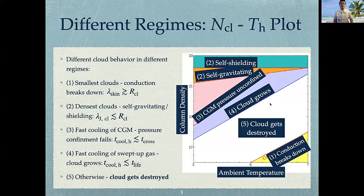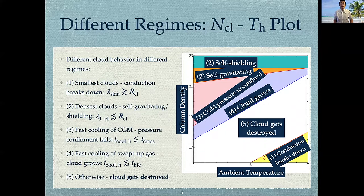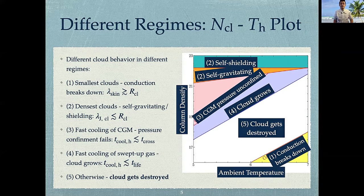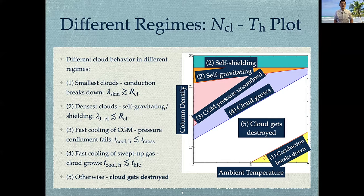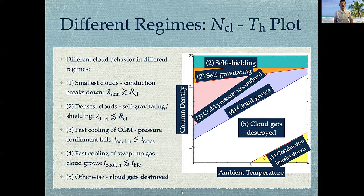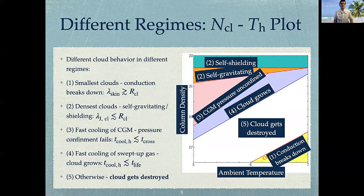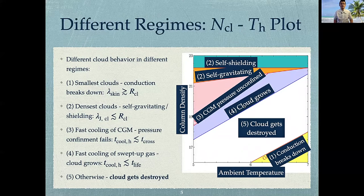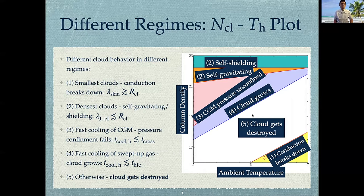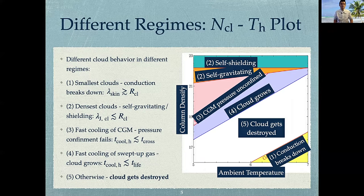So having derived all these cloud lifetimes, we identified different regimes according to different cloud densities and ambient temperatures. As shown in this plot, we found that regimes 1, 2, and 3 are either unphysical or irrelevant to our study. In the fourth regime, we find that the gas near the cloud cools faster than the cloud lifetime, so the cloud will actually grow in mass. In the fifth regime, the clouds get destroyed eventually, and we are mostly interested in this regime.